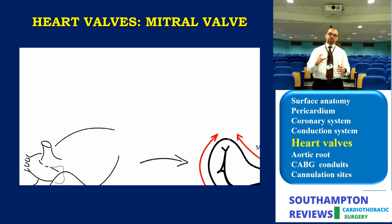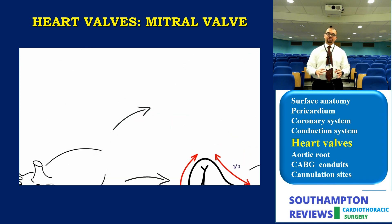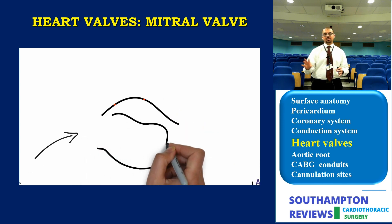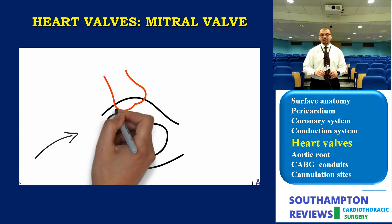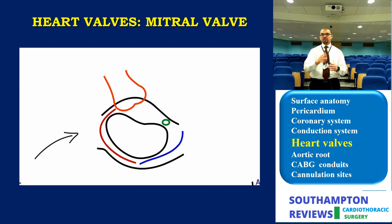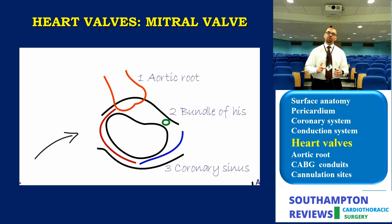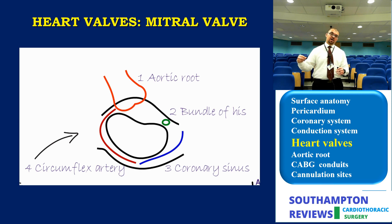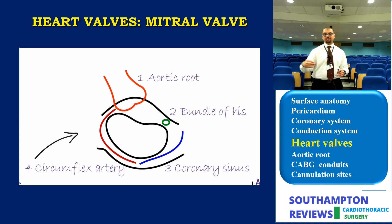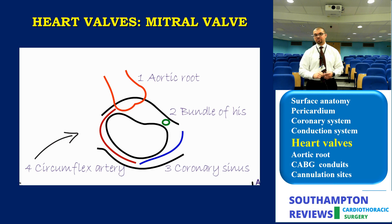Looking at annular relations, remember the surgeon's view — how the left atrium is positioned in relation to the aortic root. Four structures are always in relation to any valve of the heart — apart from the pulmonary valve — in all mitral, tricuspid, and aortic valves. The first structure is the aortic root, in close relation to the mitral valve. The second is the bundle of His — not the AV node, which embryologically originates in the sinus venosus — which travels upwards through the apex of the triangle of Koch to pierce the membranous septum, coming into close proximity to the mitral valve.